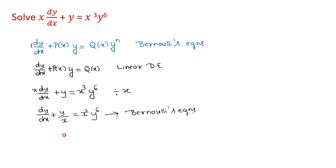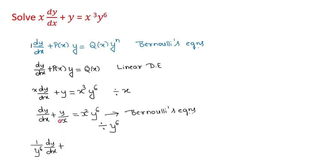This Bernoulli's equation is reduced to a linear equation by dividing the y term — divide throughout the equation by y raised to 6. So it becomes: (1/y^6) dy/dx, and in the second term y divided by y^6 gives 1/(x·y^5), is equal to x squared.